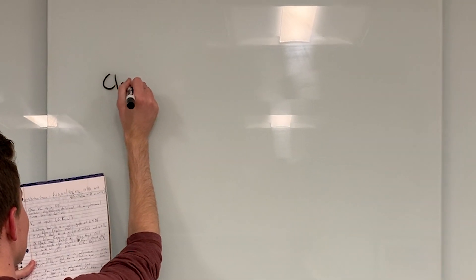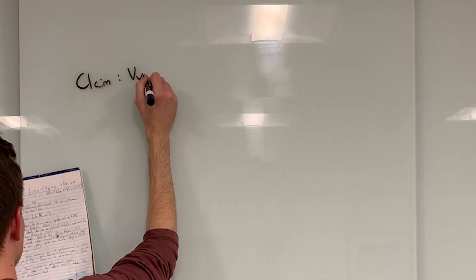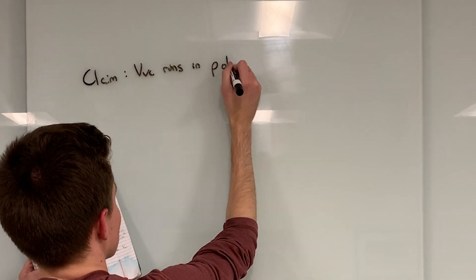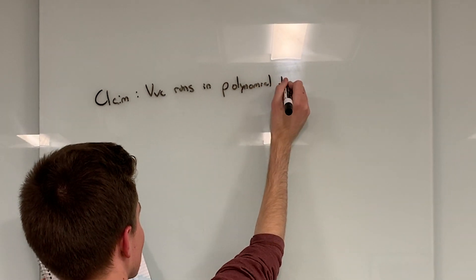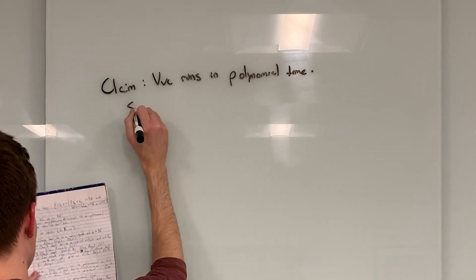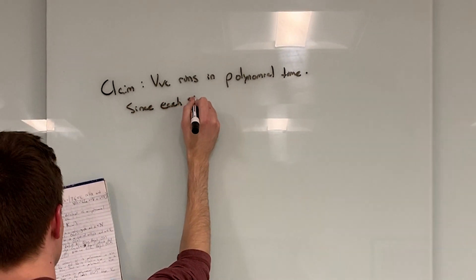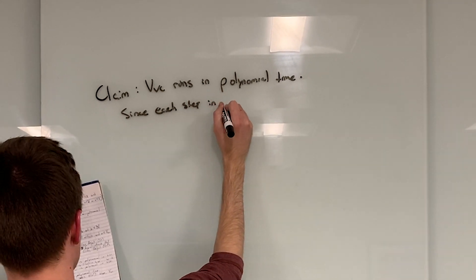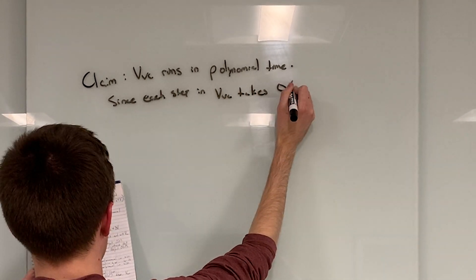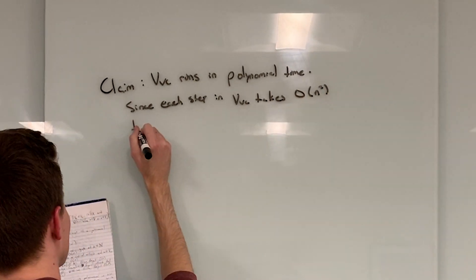The verifier runs in polynomial time. We know this because each step in the verifier takes, at most, big O of N-squared. Step 1 takes big O of N, step 2 takes big O of N-squared time, and step 3 takes constant time, while step 4 takes big O of N-squared as well.